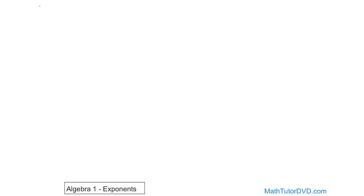For instance, if you have 6 times 6 — this is a special case where you're doing multiplication of two numbers, but the numbers you're multiplying are the same. So 6 is multiplied by itself two times. The way you write that as an exponent is the number 6 raised to the power of 2. The bottom number, the bigger number, is what you're multiplying, and the top number — what we call the exponent, this little 2 — is how many times the number 6 is multiplied by itself.